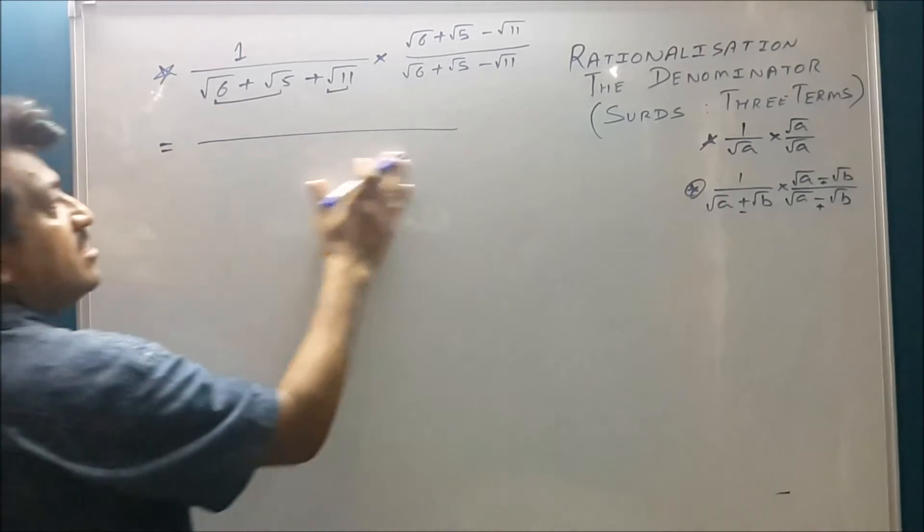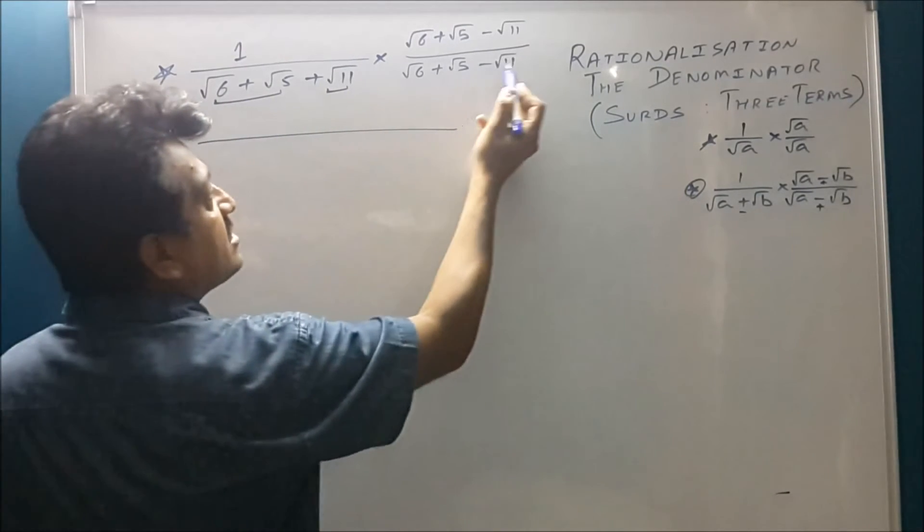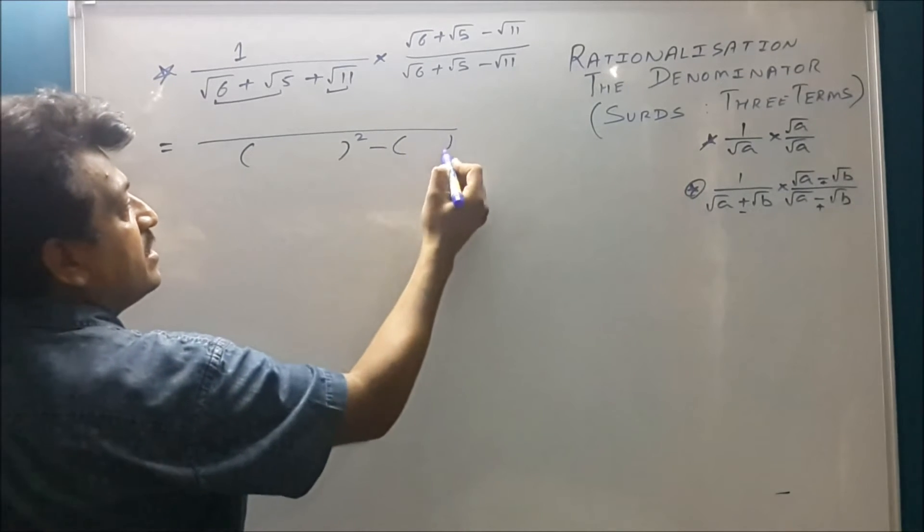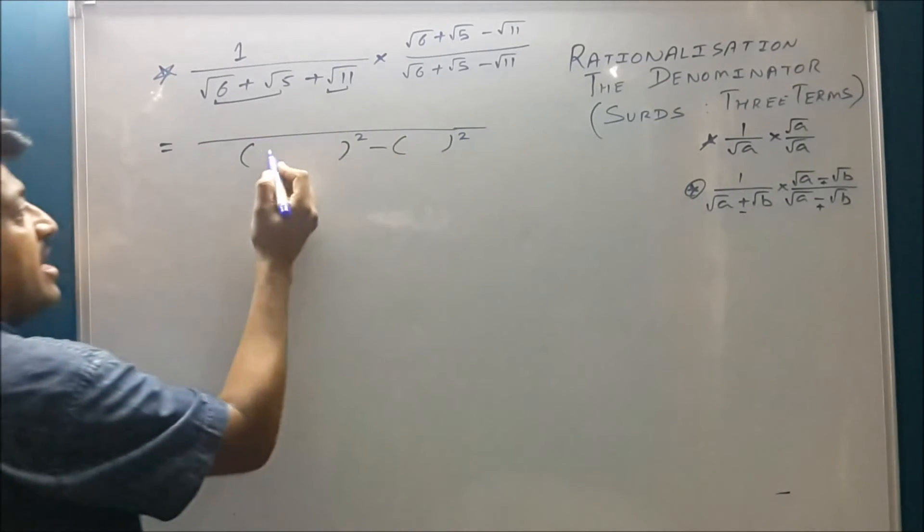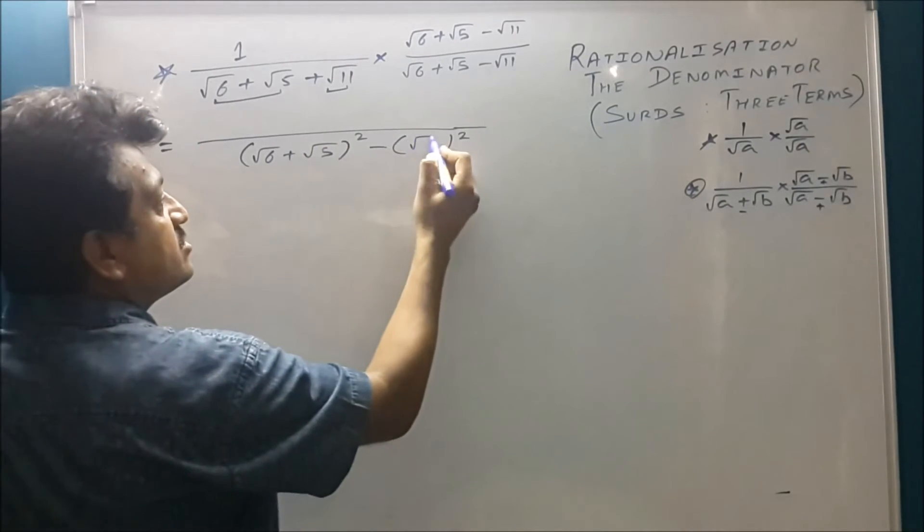So first conclude the denominator part. A plus B, A minus B, that is A square minus B square. In your A, this is root 6 plus root 5. In your B, it is root 11.